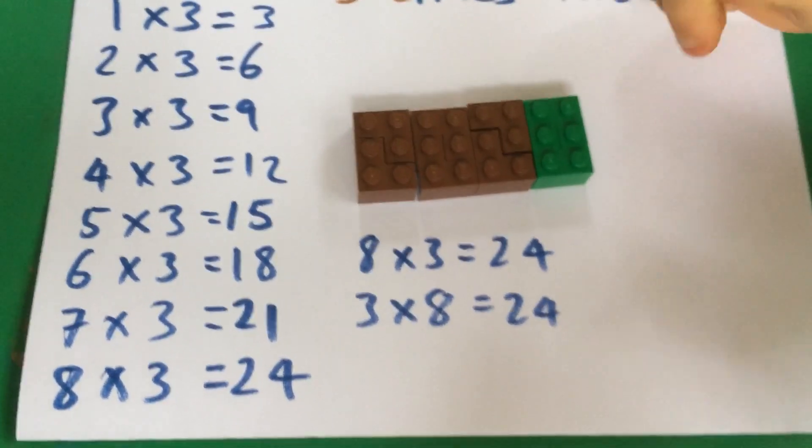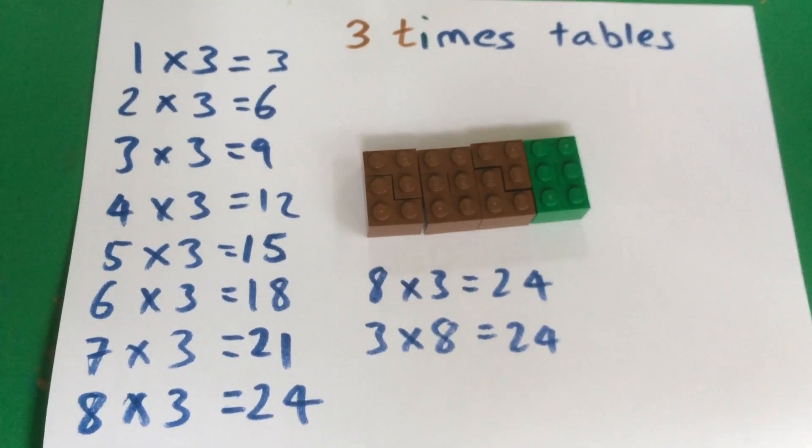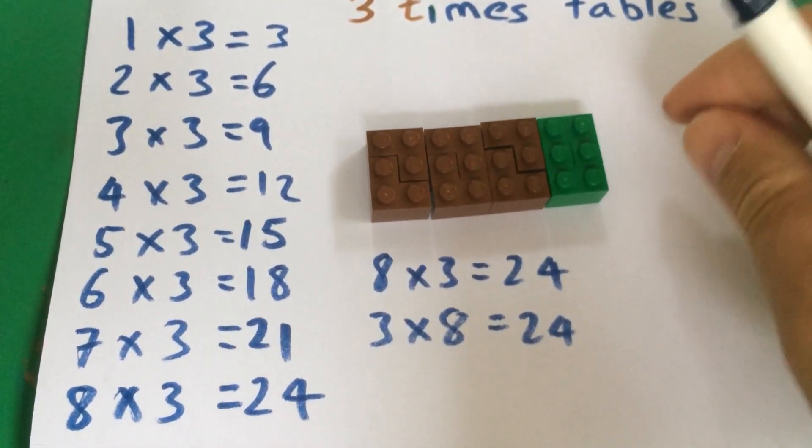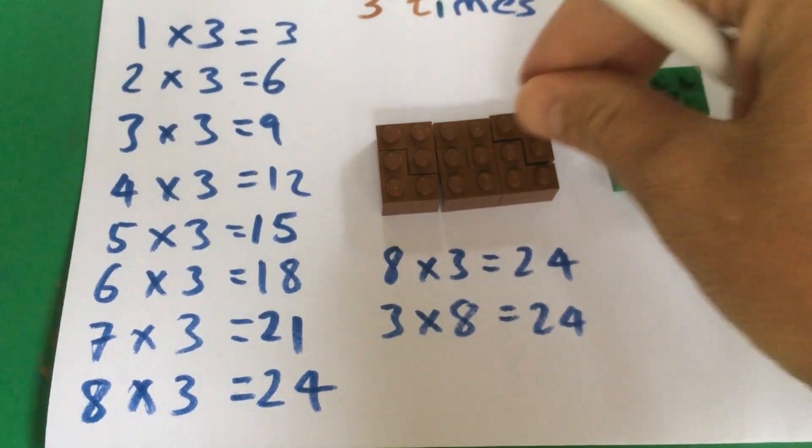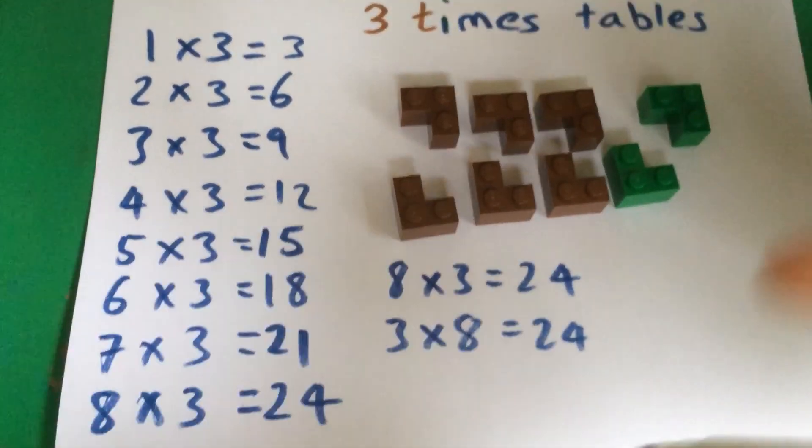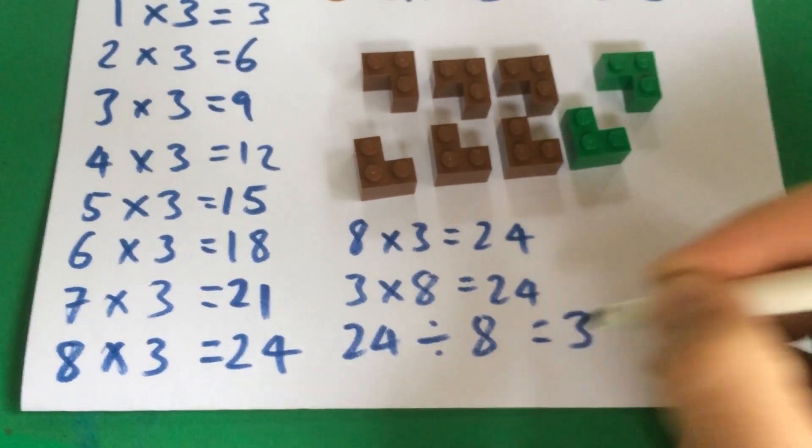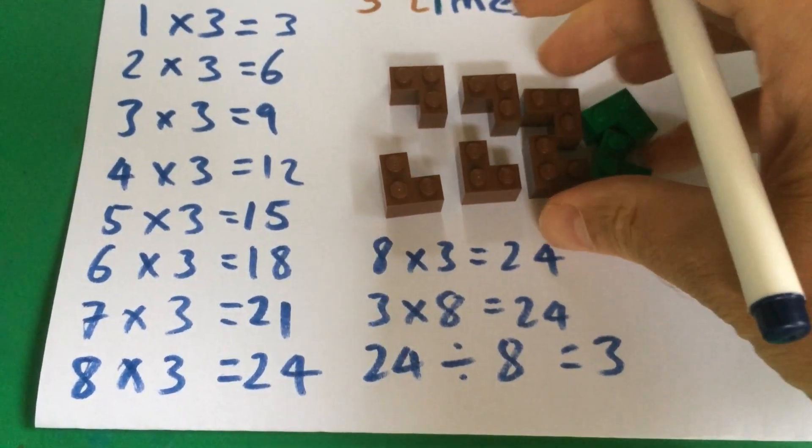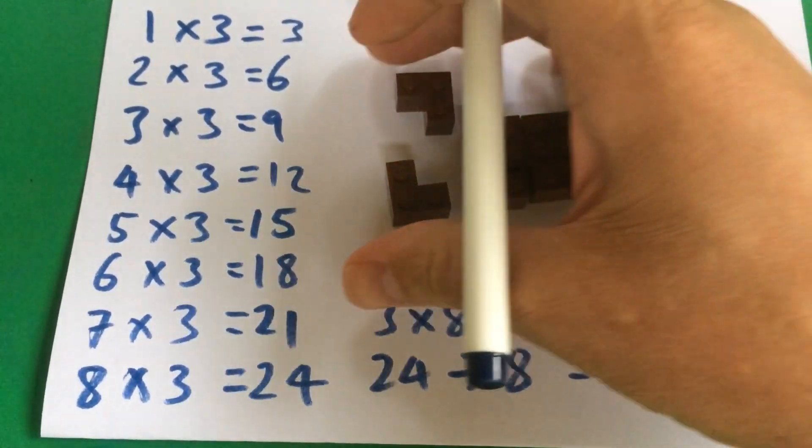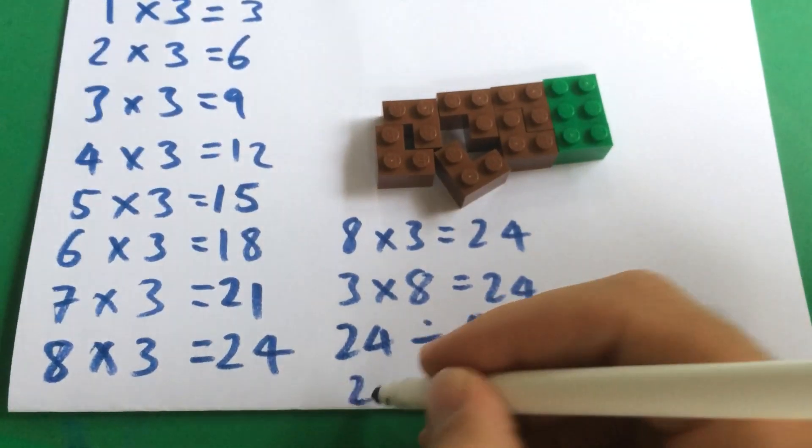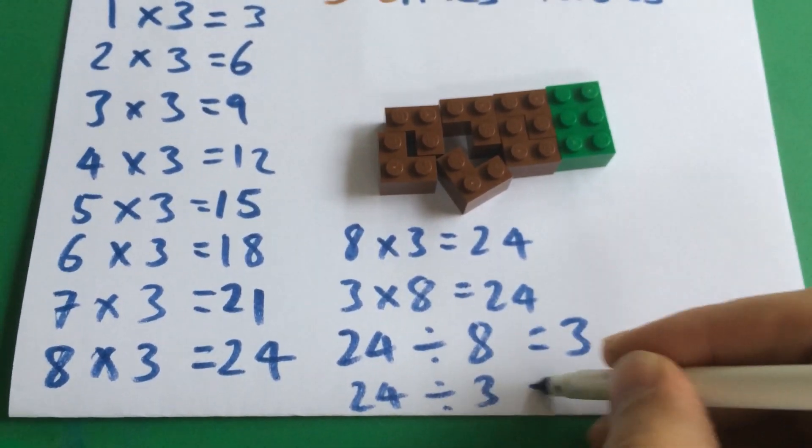And I can show you how dividing, if I wanted to break that 24 up into 8 bits, 24 divided by 8 is 3. And if I wanted to do 24 divided by 3, I'd get 8.